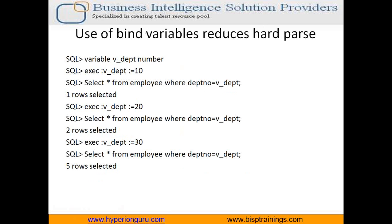Using bind variables is a very important topic — people don't know the advantage of using bind variables during SQL execution, and it makes a big difference in performance. On the SQL prompt, we can define a variable called v_dpt as a number type. We use the EXEC statement to assign a value — EXEC :v_dpt := 10. Then we write: SELECT * FROM EMP WHERE DEPTNO = :v_dpt. This SQL statement will be parsed and stored in the library cache once.